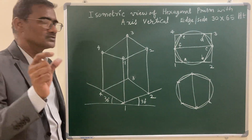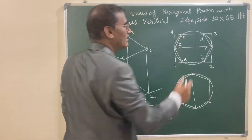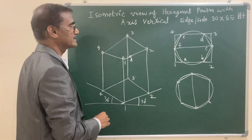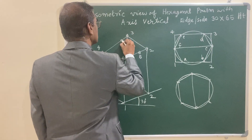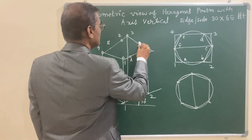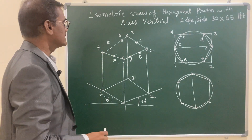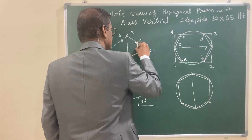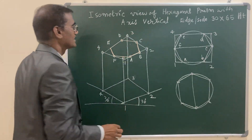Now locate the hexagon vertices using a compass. From point one mark vertex A, from point two mark vertex B, from point three mark vertex D, and from point four mark vertex E. Point C is the midpoint of one edge and point F is the midpoint of the opposite edge. Join all points in proper sequence — A to B, B to C, C to D, D to E, E to F, and F to A — to get the bottom face hexagon.